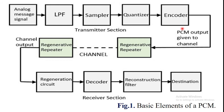In the transmitter part, sampling, quantizing, and encoder are the three blocks that form the analog-to-digital signal converter section. The low-pass filter prior to sampling avoids aliasing of the message signal.